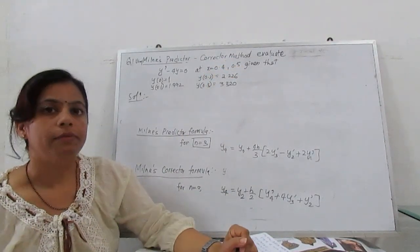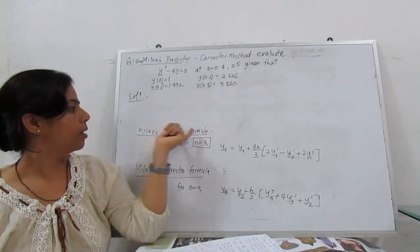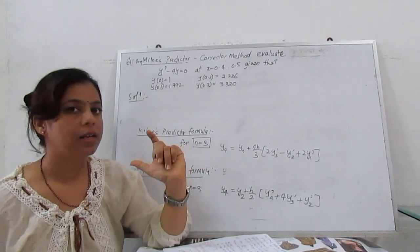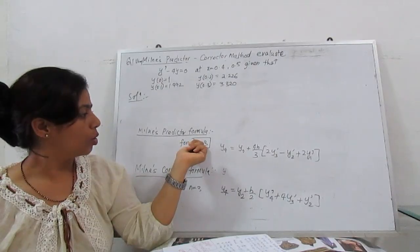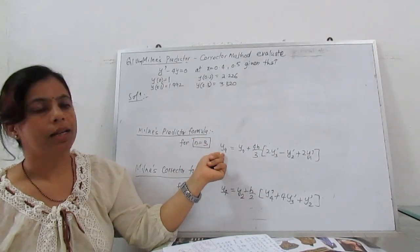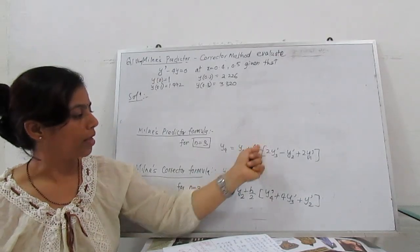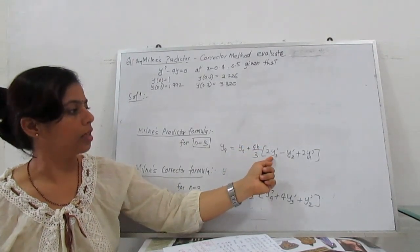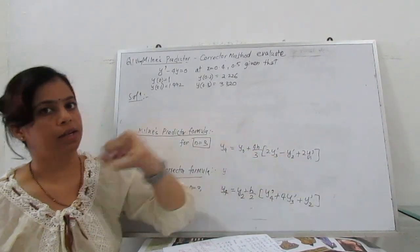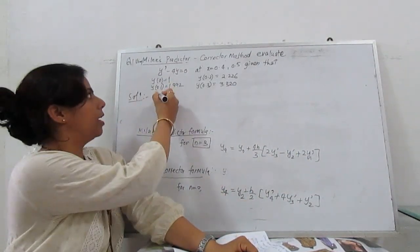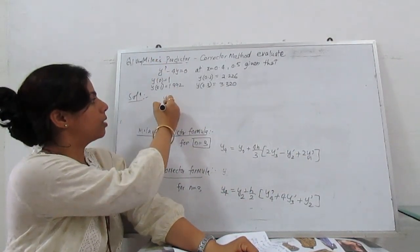Proceed with Milne predictor formula. For predictor formula when n = 3, it is given by y₄ = y₀ + (4h/3)[2y'₃ - y'₂ + 2y'₁]. What is y'? y' means dy/dx = 4y.